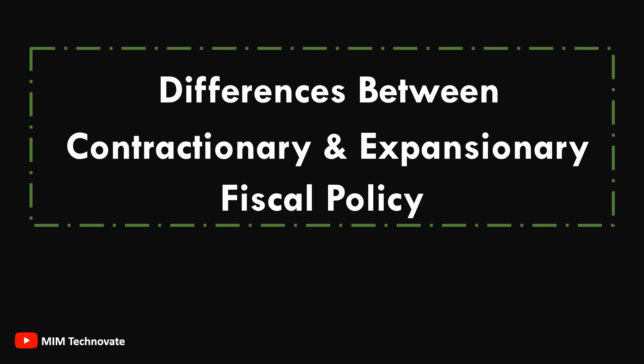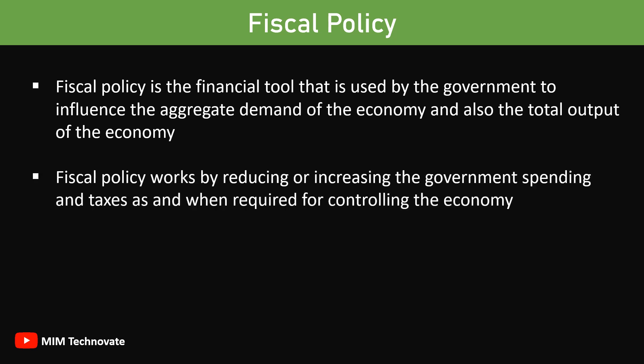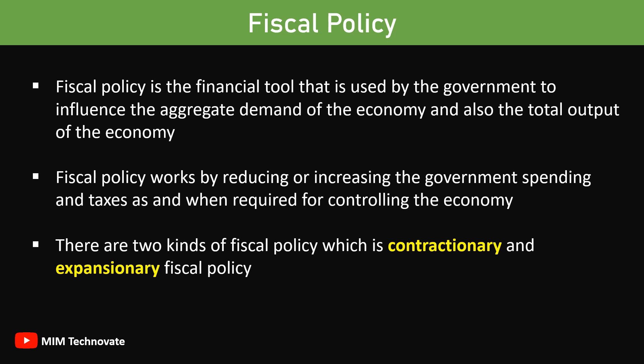Difference between the contractionary and expansionary fiscal policy. Fiscal policy is the financial tool used by the government to influence the aggregate demand of the economy and also the total output of the economy. Fiscal policy works by reducing or increasing the government spending and taxes as and when required for controlling the economy. There are two kinds of fiscal policy: contractionary and expansionary fiscal policy.